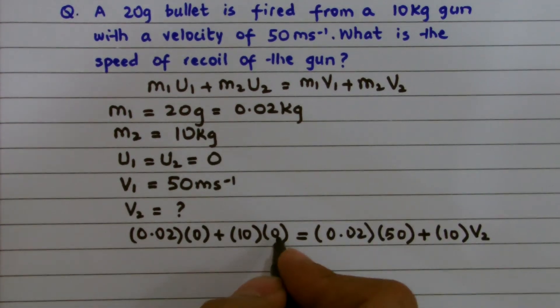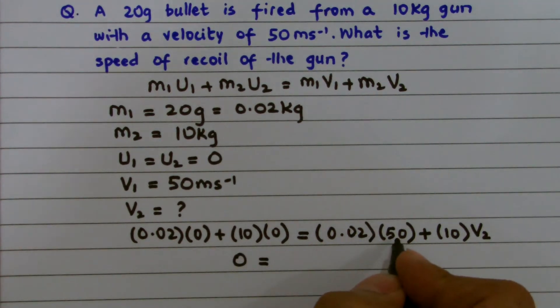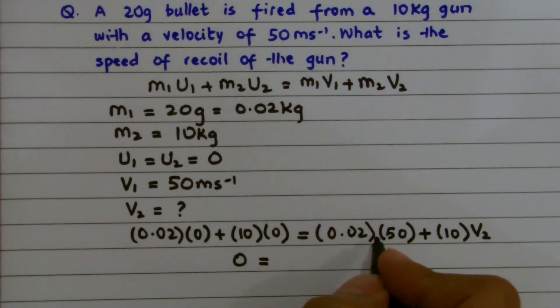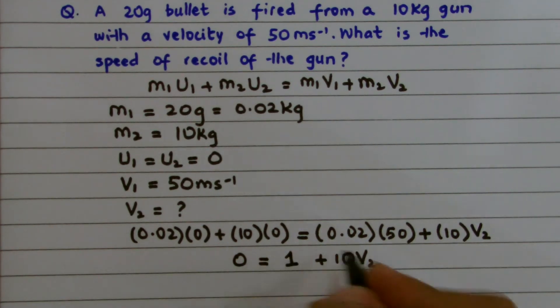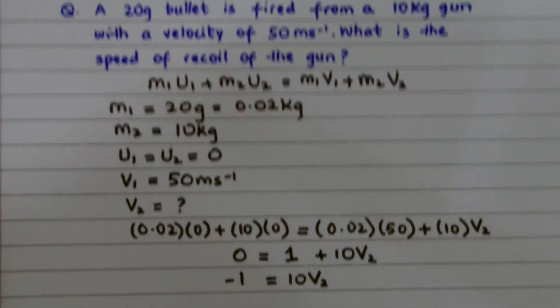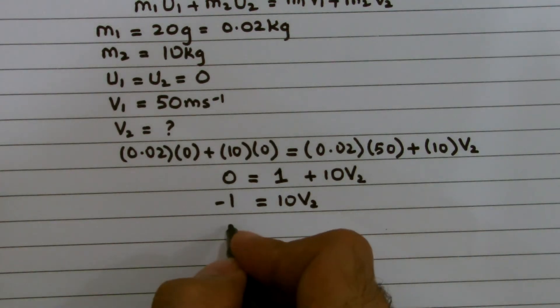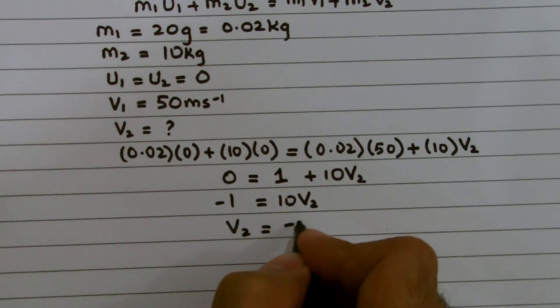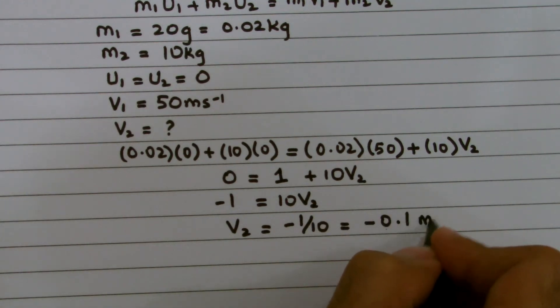All the values on the left hand side of this equation become 0. On the right hand side, I have 0.02 multiplied by 50. I get 52 times 10, that becomes 1 plus 10 times V2. I shift this one or add negative 1 to both sides. I get minus 1 equals 10 V2. When I further solve, I divide both sides by 10. I get V2 equals minus 1 by 10 or minus 0.1 meters per second.